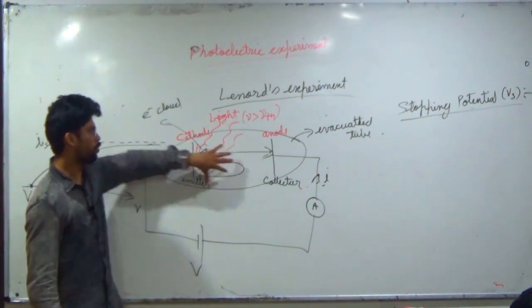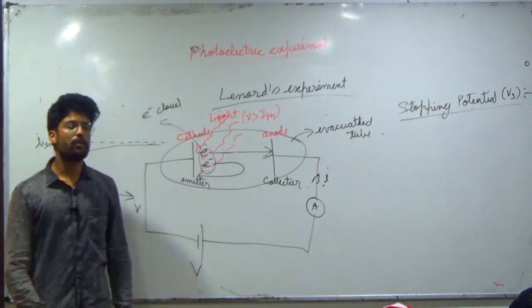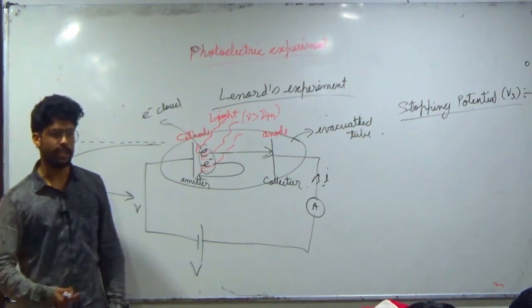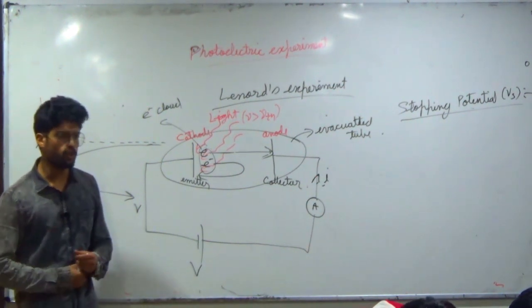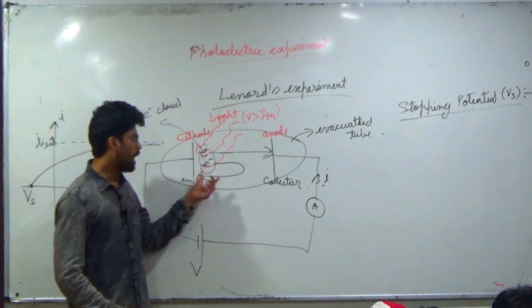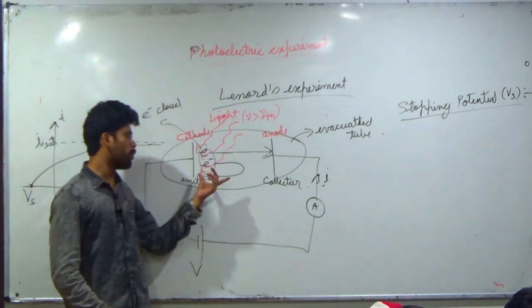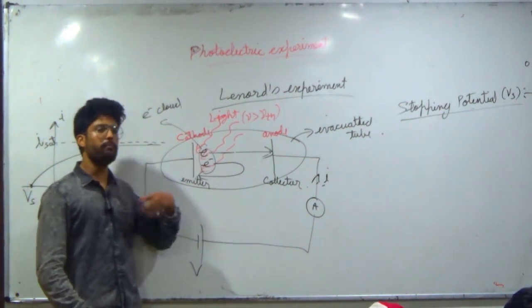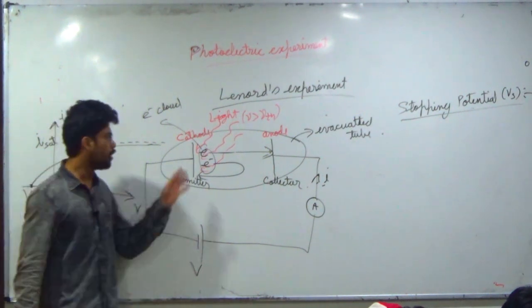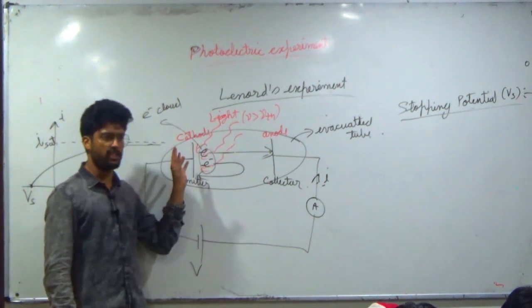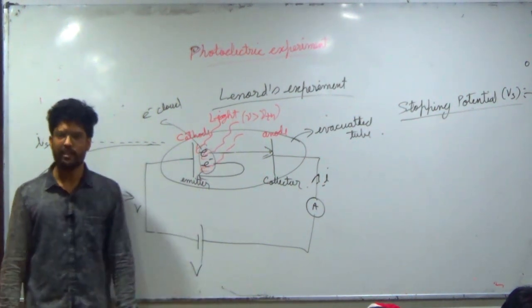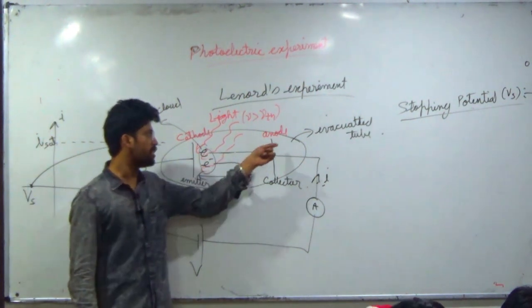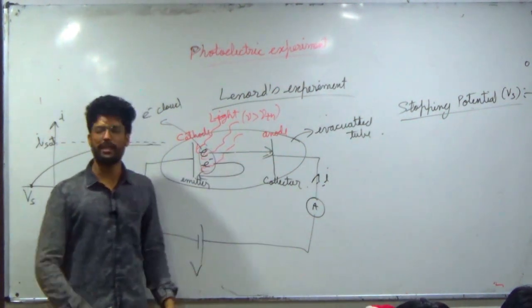All the electrons will be taken back. So, when we apply this potential difference between the plates, the electron with maximum kinetic energy is just barely stopped. The maximum kinetic energy electrons have the highest chance of reaching the collector, but at stopping potential even they are turned back.